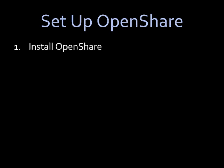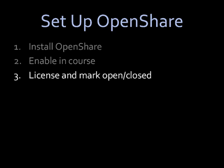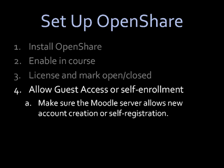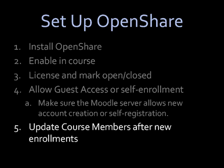To recap, here's what you need to do to set up OpenShare. First, download and install the OpenShare block. Second, enable it in the course or courses that you want to use it. Third, within those courses, you'll need to license and mark each resource and activity as open or closed. In order to allow the public to access these open resources, in course settings you'll need to allow guest access or OpenLearner self-enrollment. You can allow both, but if you're allowing OpenLearner to self-enroll, make sure that the Moodle server allows new account creation or self-registration. And finally, update course members after new enrollments have been added to the course — this ensures that your registered students have access to everything that they need.